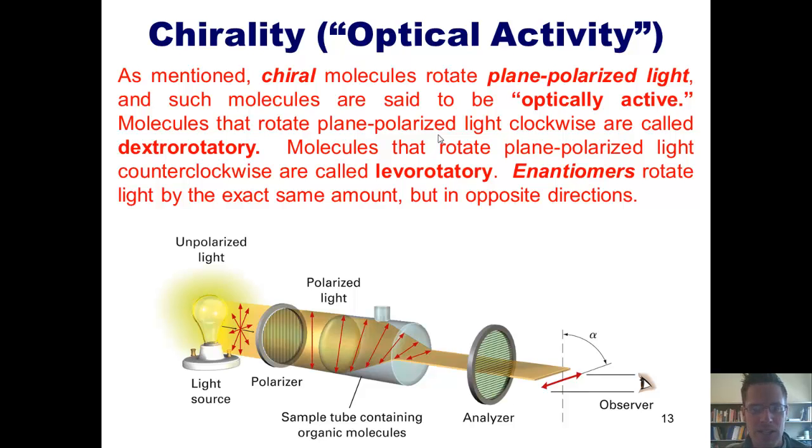One thing that you need to understand is that enantiomers of each other rotate light by the exact same amount, but in opposite directions. So if I had one enantiomer pure in a container put into a polarimeter, and it rotated the light clockwise, then if I had a pure container with the opposite enantiomer in it, it would rotate the light by the exact same amount counterclockwise.